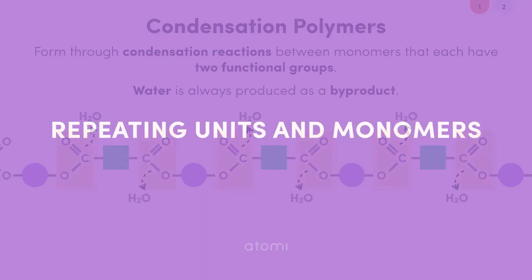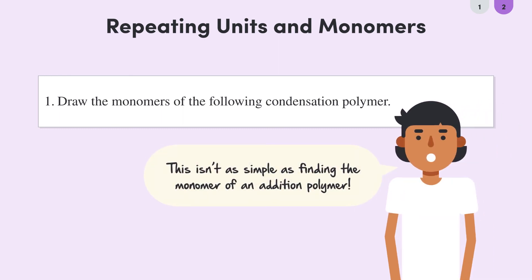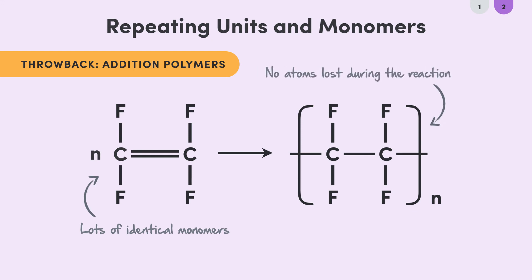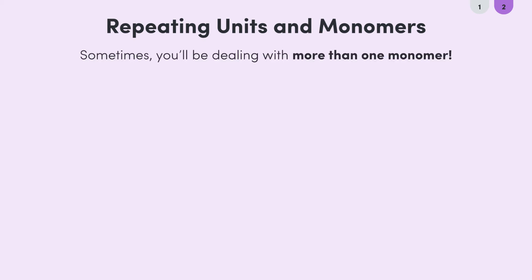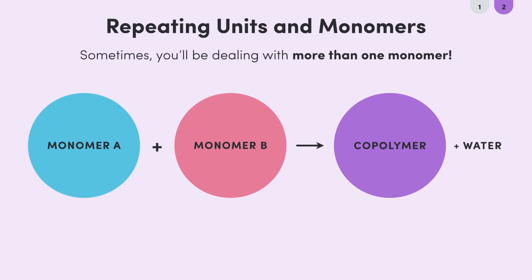In an exam, you might be given a polymer and asked to find the monomers it's derived from. We know how to do this for addition polymers, but it's a little different when it comes to condensation polymers. With addition polymers, it was pretty simple because they're made up of lots of identical monomers, and since no byproducts are formed, whatever atoms are present in the monomer are also present in the polymer. Unfortunately, we can't say the same for condensation polymers, because sometimes we'll have a copolymer made from two different monomers, and some of the atoms are removed as water. So unlike in addition polymers, the repeating unit and monomers aren't always going to be so similar.